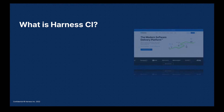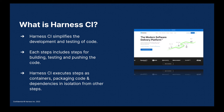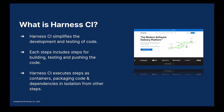So what is Harness CI? Harness CI simplifies the development and testing of code in a Harness pipeline. You visually model your build and test processes as CI stages. Each stage includes steps for building, testing and pushing your code. It executes steps as containers, packaging code and dependencies in isolation from other steps. You simply specify a container to use and Harness locates and launches the container in which the job will run.